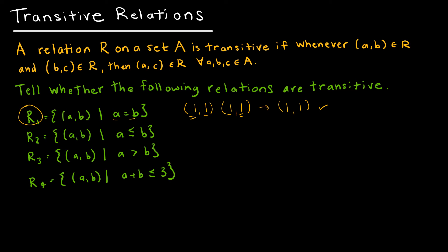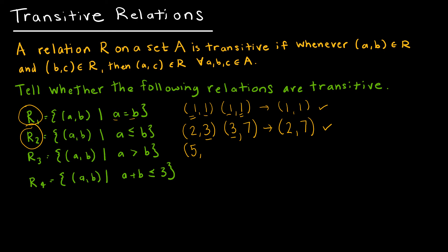R2 says A is less than or equal to B. If 2 is less than or equal to 3, and 3 is less than or equal to 7, does that imply 2 is less than or equal to 7? Yes, not just for this example, but every single time. So R2 is transitive. R3 says A is greater than B — similar reasoning: if 5 is greater than 2, and 2 is greater than 1, does that imply 5 is greater than 1? Yes. So R3 is also transitive.